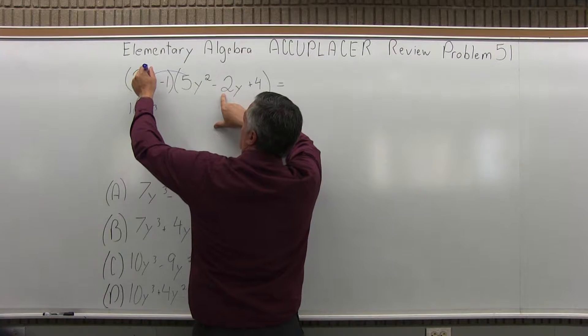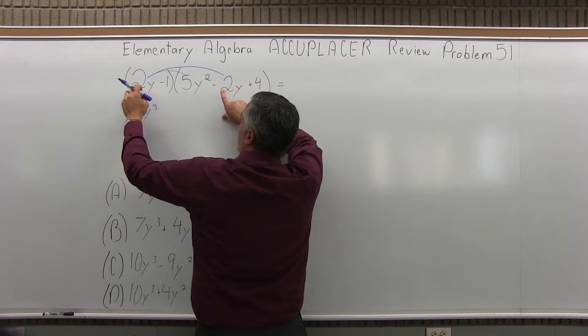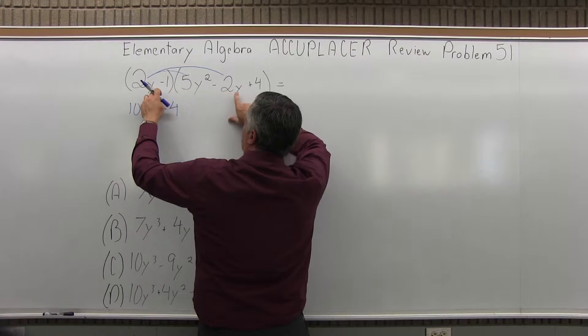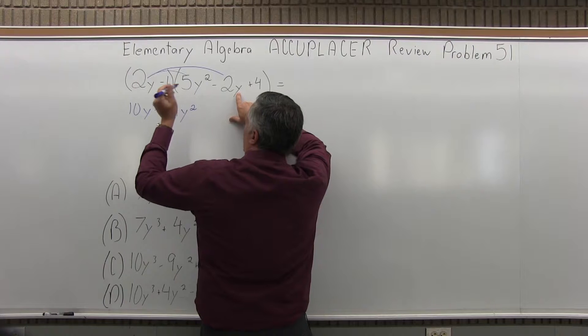Now next, 2y times negative 2y. 2 times negative 2 is negative 4. I concentrate on the numbers first and then do the variables. Y times y would be y to the second or y squared.